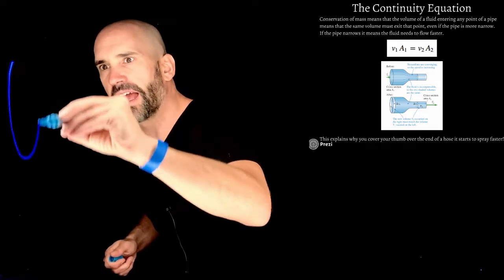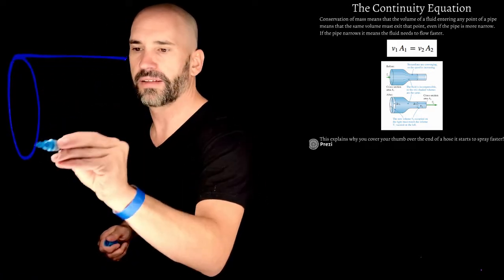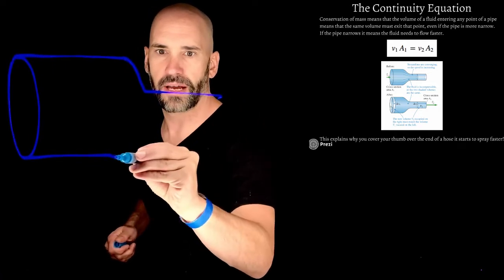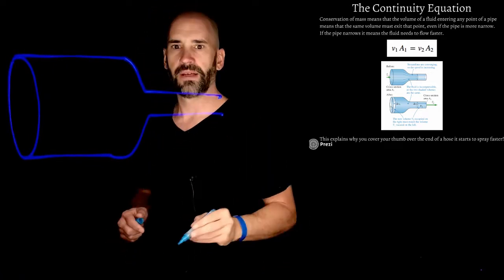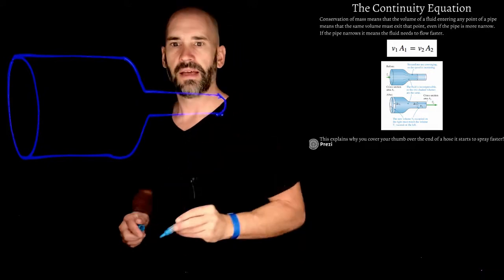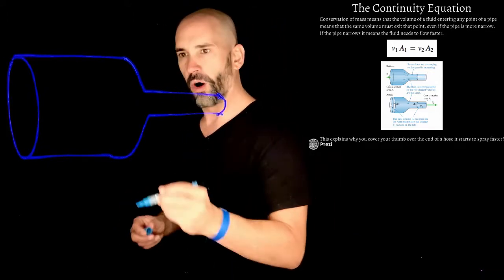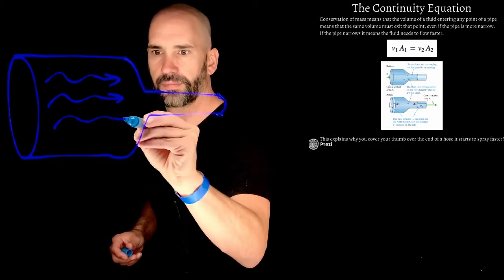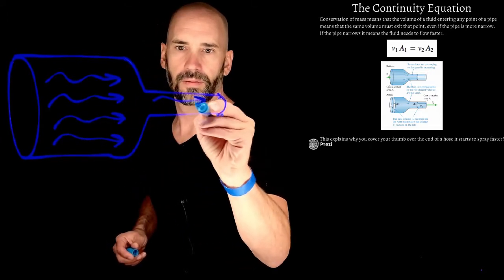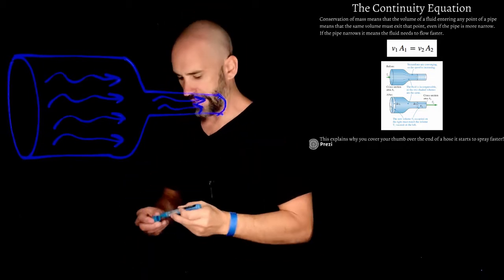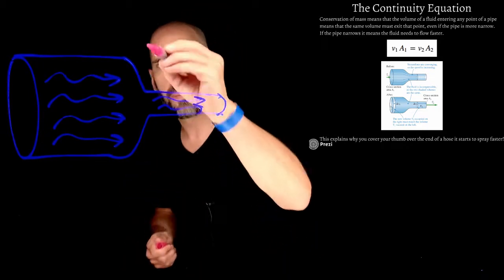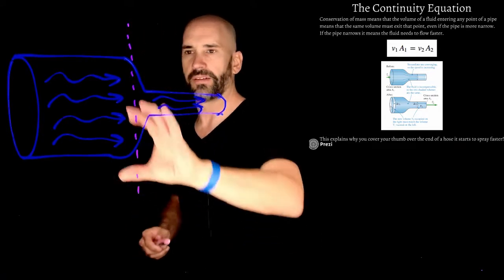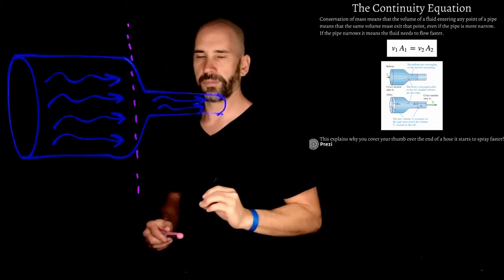So imagine you have a large diameter pipe like this, and imagine then it tapers off to a smaller diameter pipe, like this. Now you have water flowing through here. And now imagine that there's some imaginary line that separates the two, the large diameter from the small diameter.